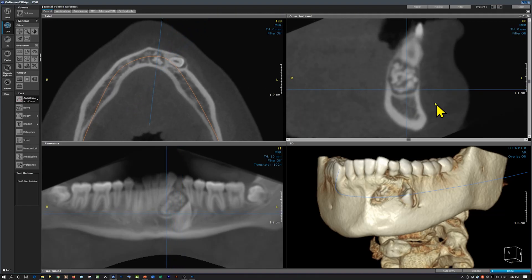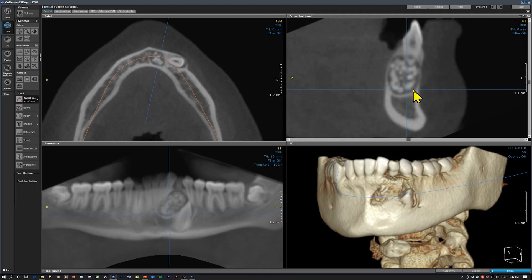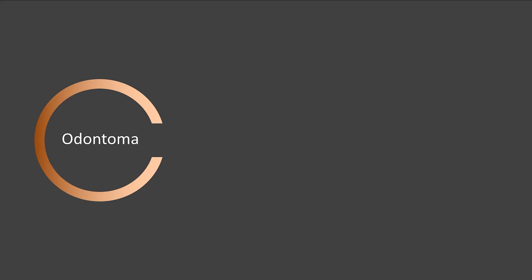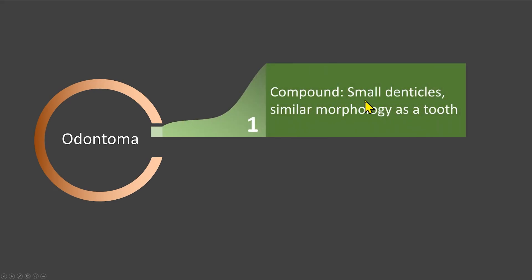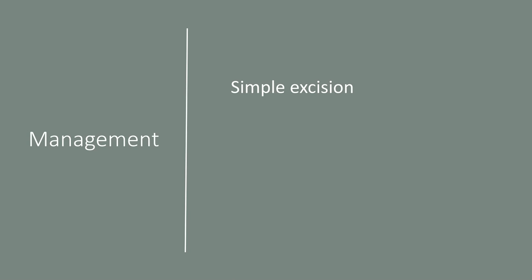As we went through, we did not see any signs of a morphological similarity to a tooth structure, so this would be a complex odontoma. An odontoma can be of two types: compound, where we have small denticles similar in morphology to a tooth, and complex, which has no morphological similarity to a tooth structure, as seen on our radiograph. Management is a simple excision and removal of the odontoma, which is sufficient with no recurrence.